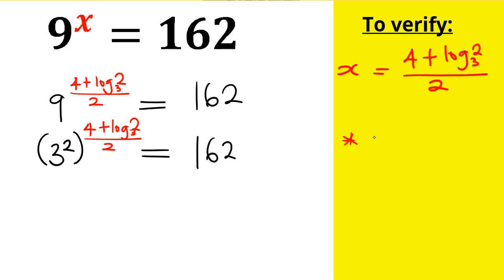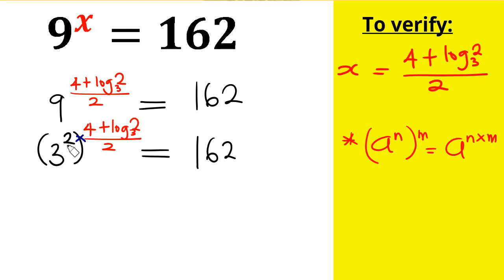By the rule of indices, if I have (a^n) raised to another power m, I multiply the exponents. So the 2 from 3² and the denominator 2 cancel each other out, leaving us with 3 raised by the power of (4 + log 2 base 3). This should still equal 162.